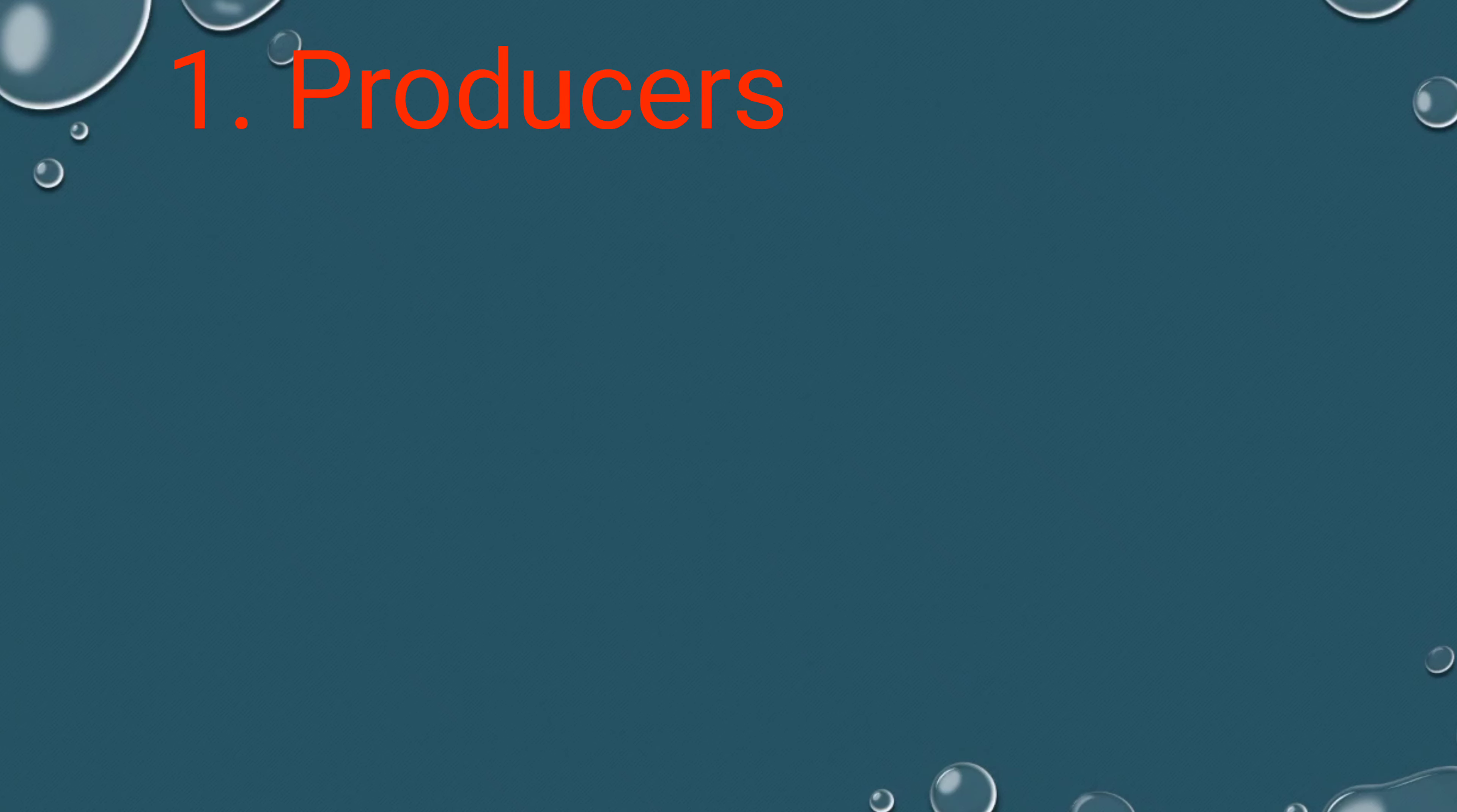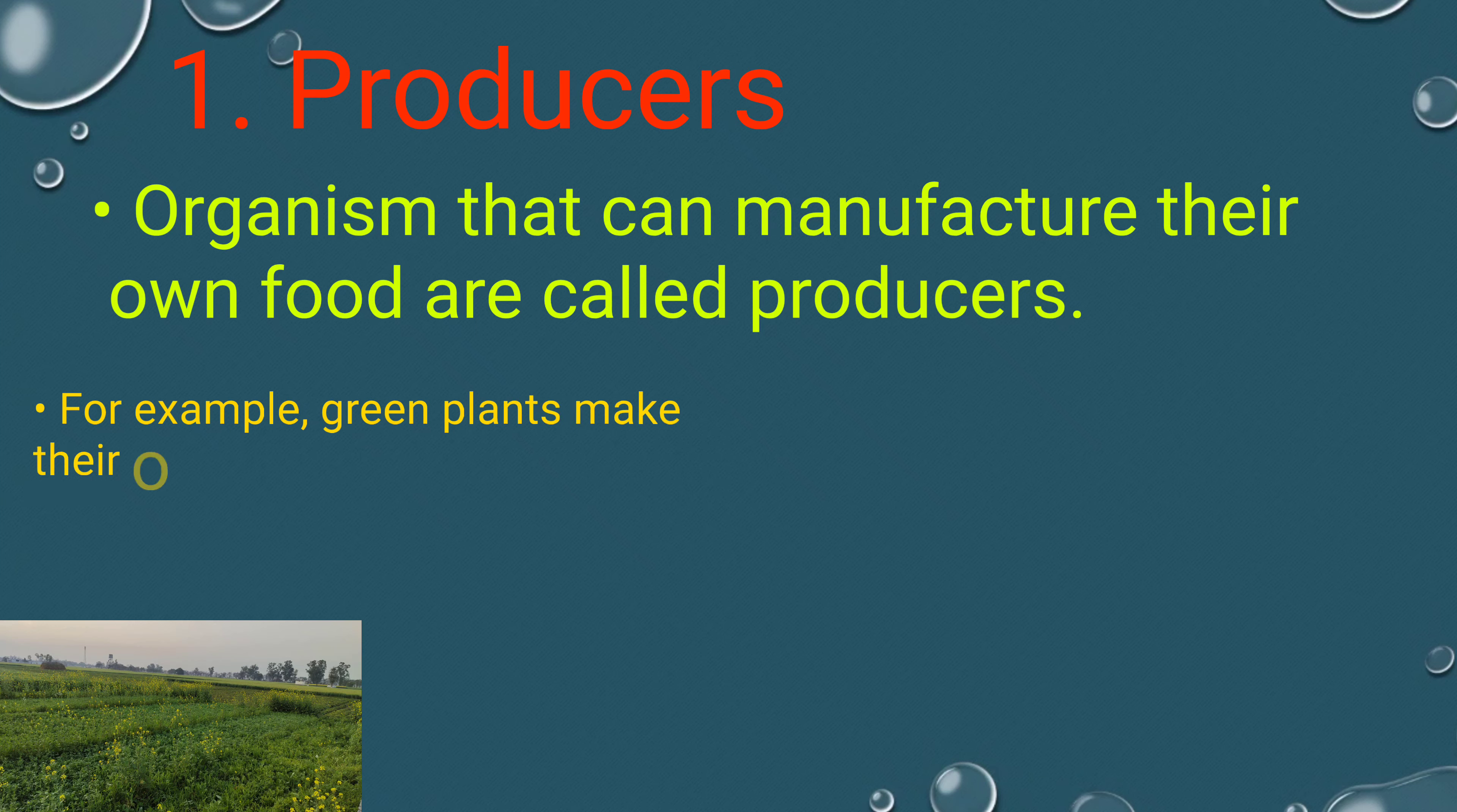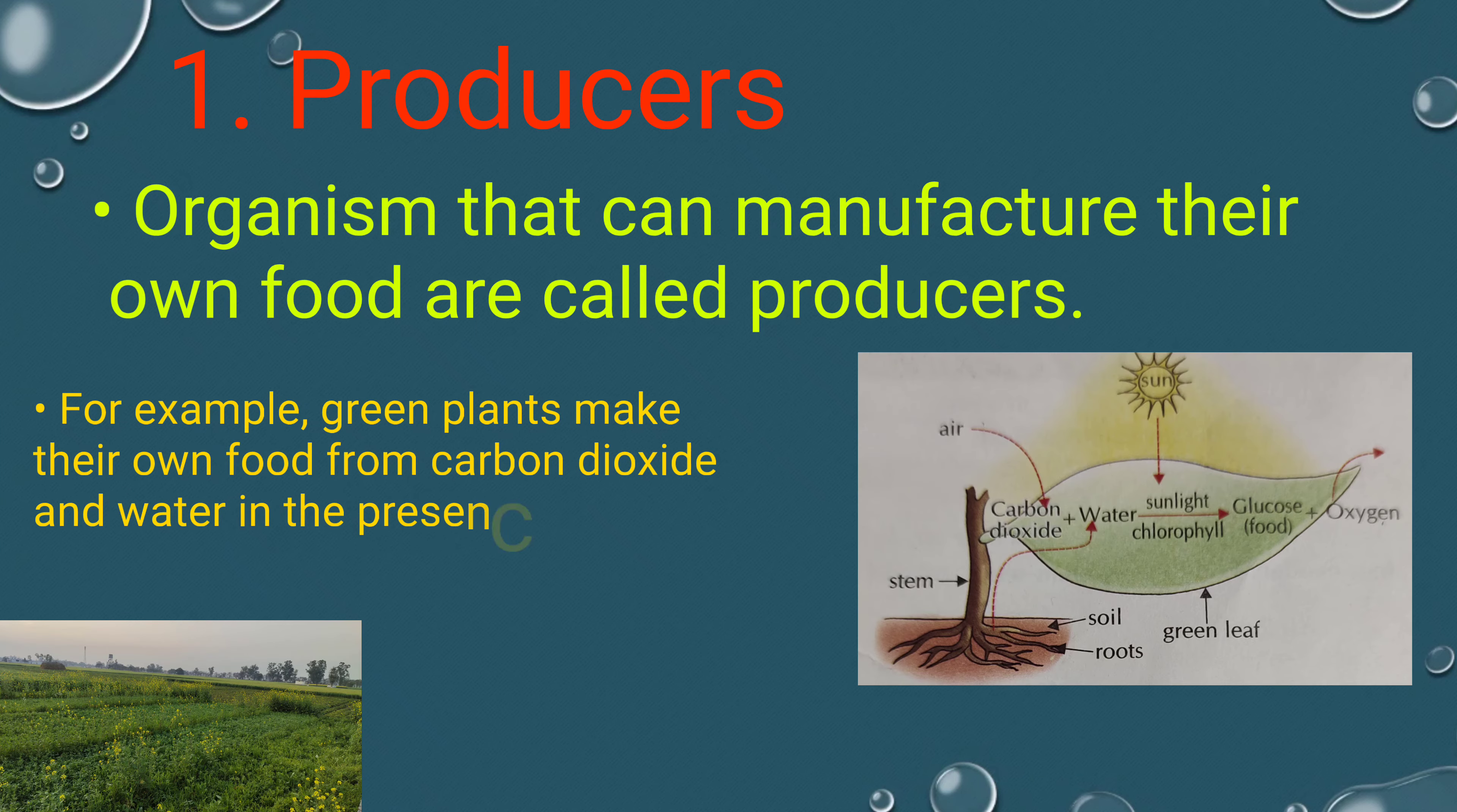Producers: Organisms that can manufacture their own food are called producers. For example, green plants make their own food from carbon dioxide and water in the presence of sunlight. These are called producers.